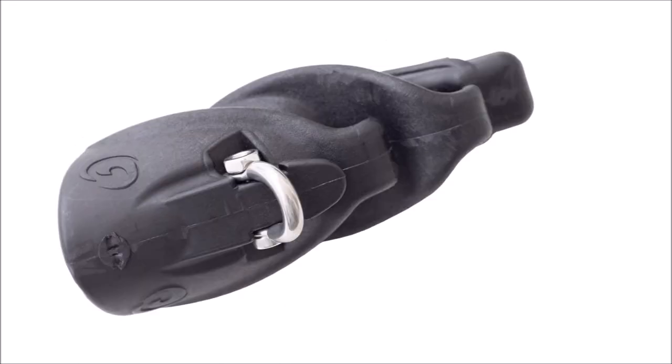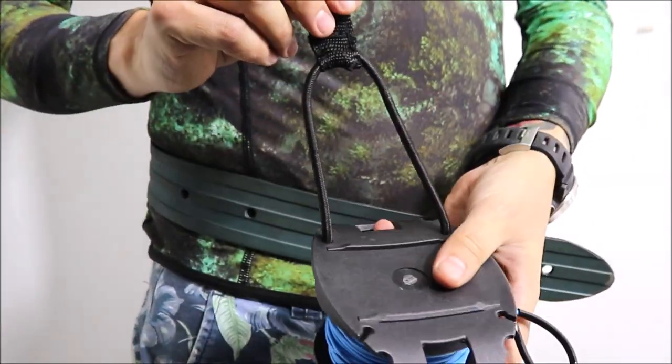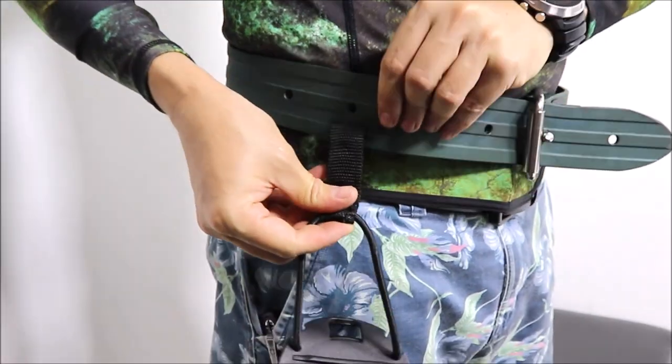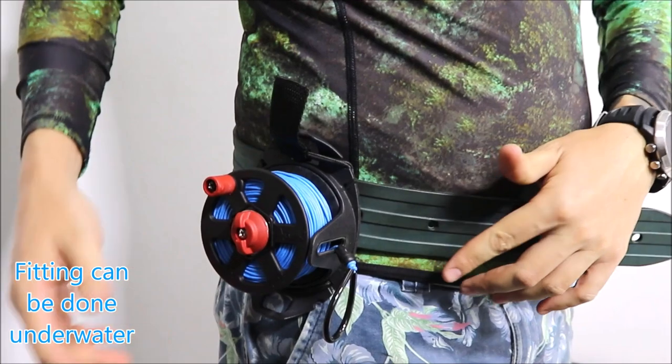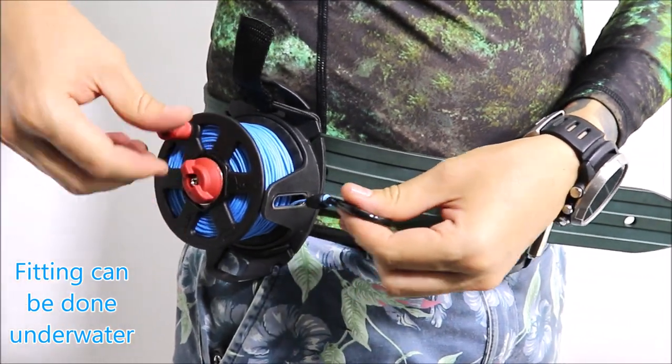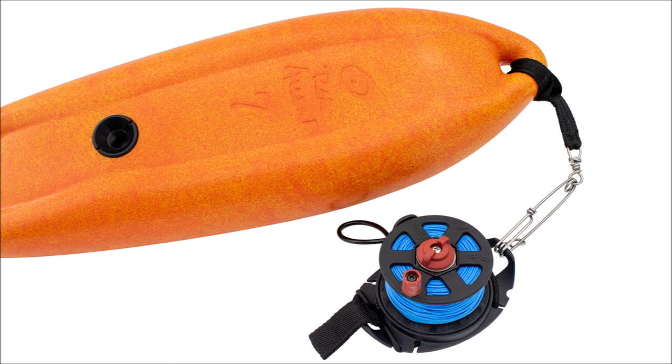The belt reel is very easy to fit to the belt whilst you're wearing the belt. It's easy to clip on and clip off. It also has holes on the top to grip with your fingers and/or to clip a float onto it if you need to release the belt reel.